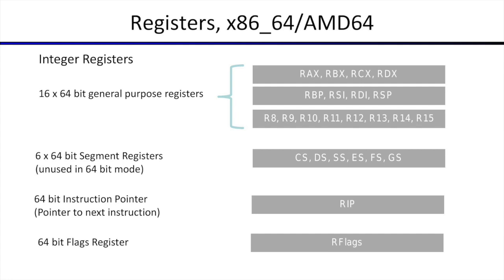There are also six 64-bit segment registers. Segments were there for backward compatibility and to get addressing in 32-bit mode, but in 64-bit mode these are usually not used for address pointing. There is one register which is the instruction pointer, and there is one register where flags are stored. We will get to these in a little while.